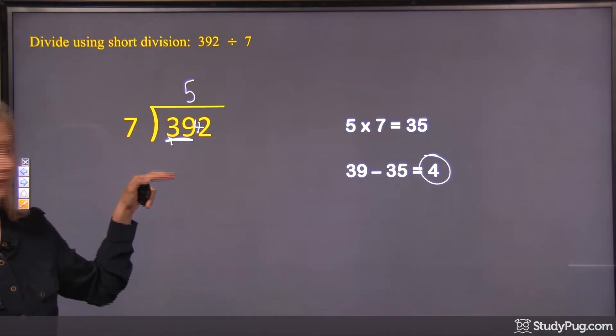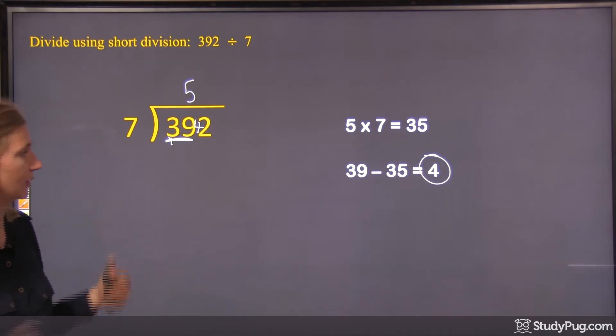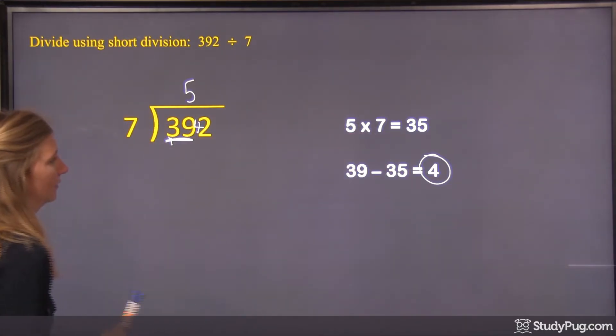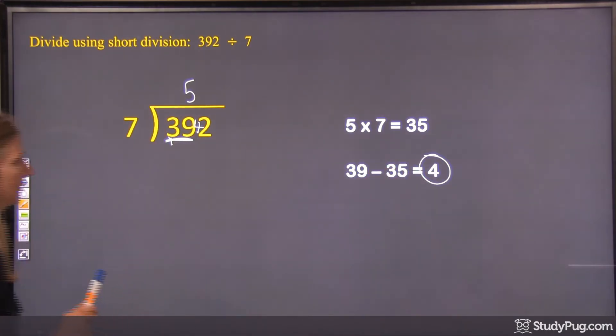Right, instead of in the long division when we write out all the subtractions, instead of doing that, we're doing the division in our head, and then we're putting that, whatever's left over, in front of the next place value.